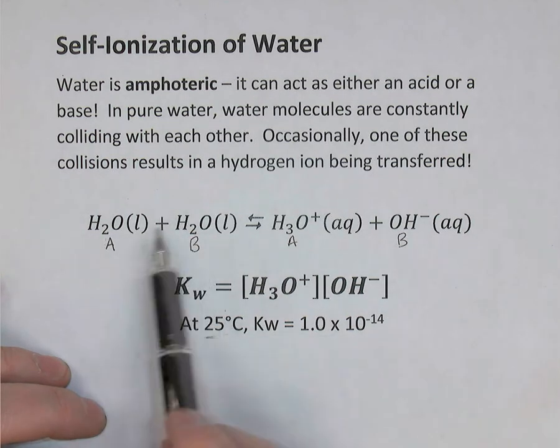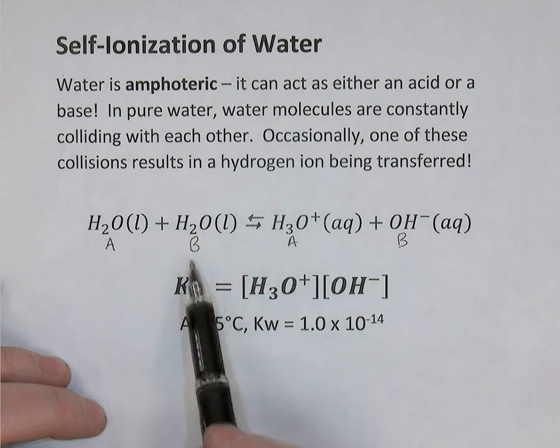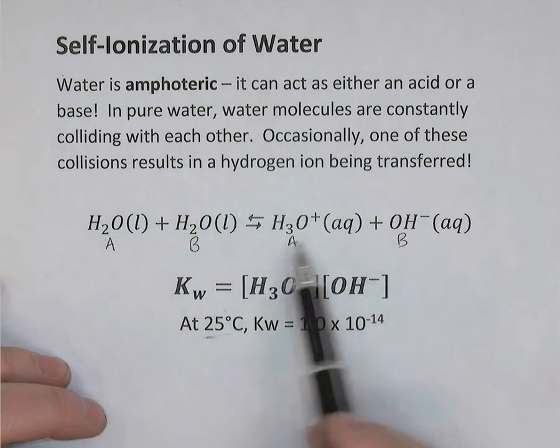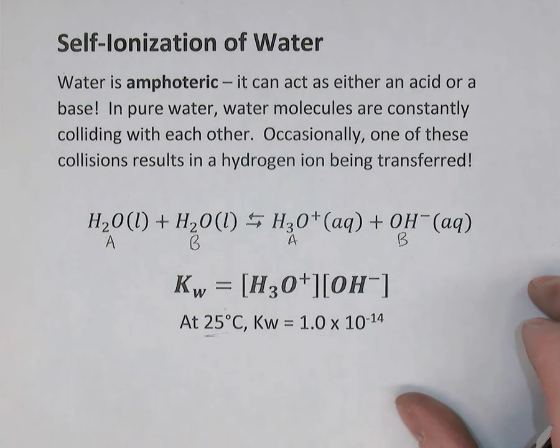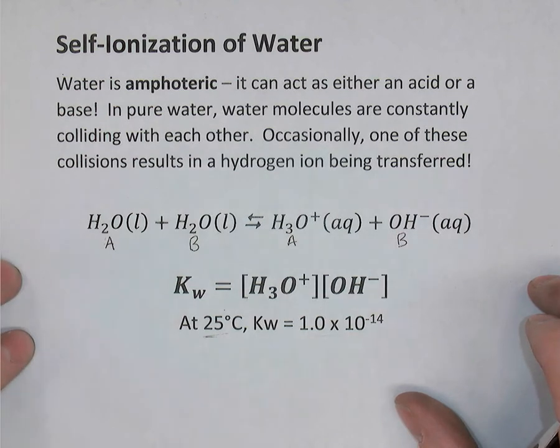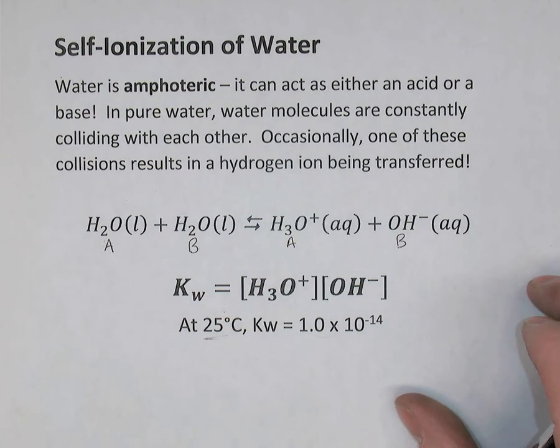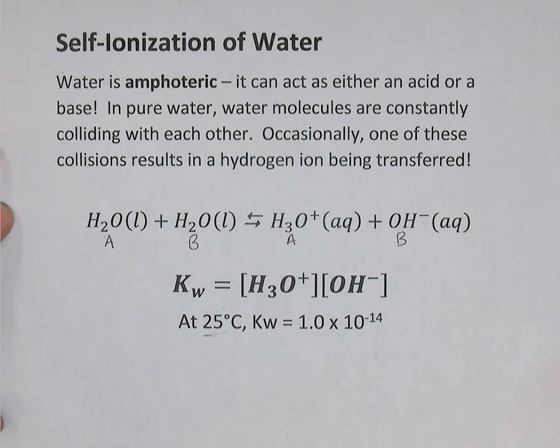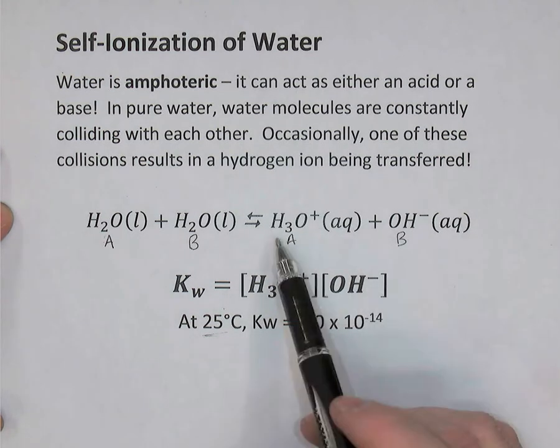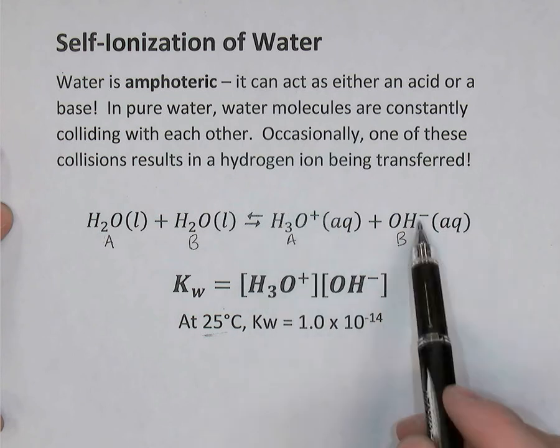So most water molecules in a beaker of water are not being converted into hydronium hydroxide. There's very little of this. Of course, that explains why water is not a good conductor of electricity, because it has very, very few ions present. You might have thought that there were no ions, but now you understand that in pure water, there's always going to be some hydronium and some hydroxide present.